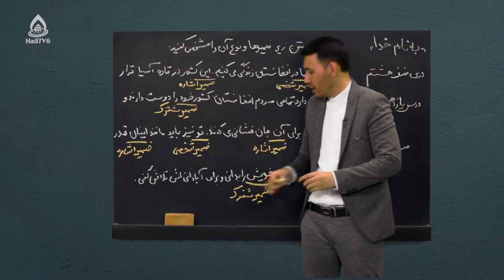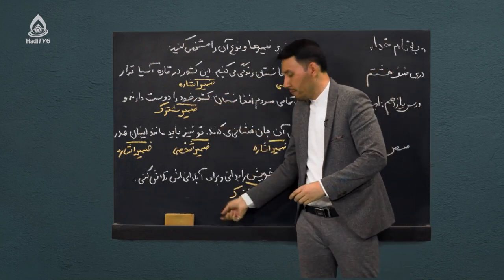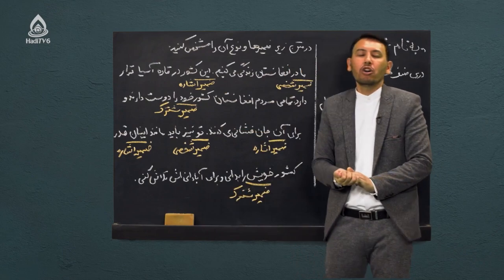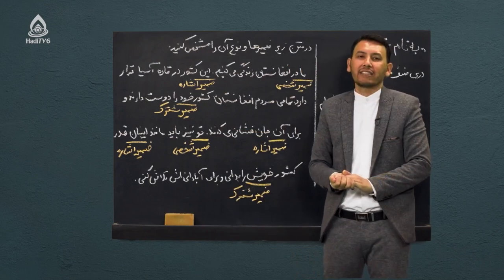در مجموع یک، دو، سه، چهار، پنج، شش و هفت — هفت ضمیر در داخل این متن داشتیم که برای شما مشخص کردیم.